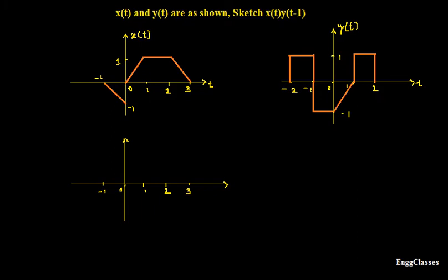The two signals x(t) and y(t) are given. This is x(t) and this is y(t). The task is to sketch x(t) multiplied with y(t-1). I need to sketch this signal — how does that signal look like? That is the task.